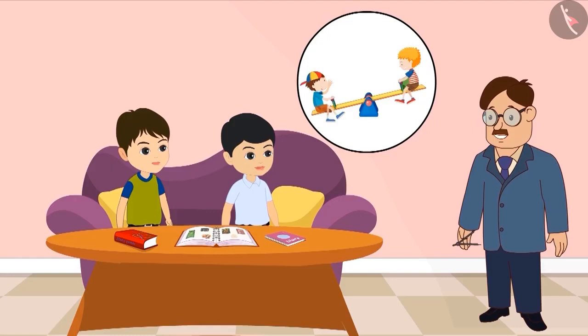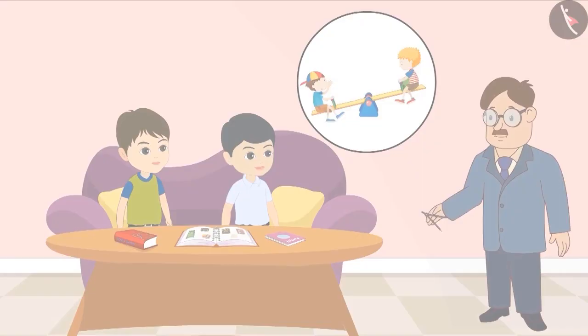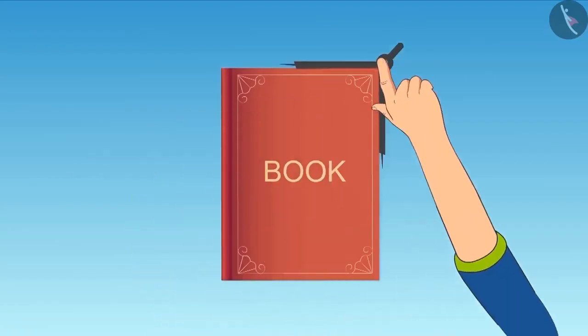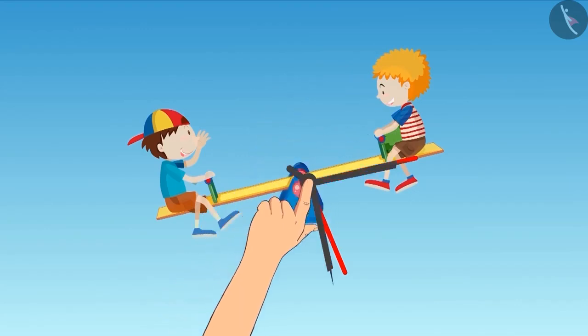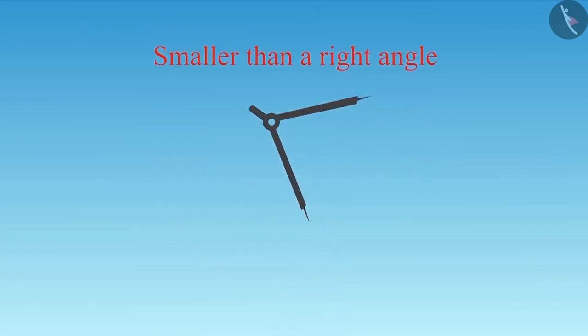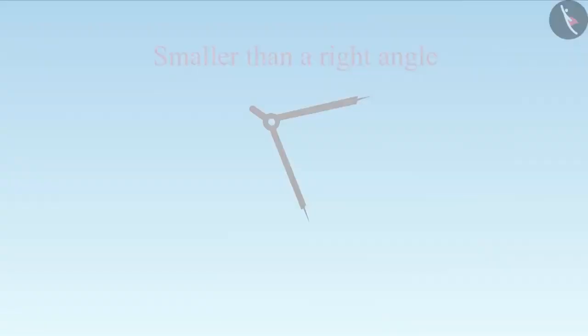To identify the angle in this picture, we will place the divider this way. See, the divider was as open as the measurement of the right angle before. Then to measure this angle, we had to slightly reduce the distance between the two sides of the divider. This means that this angle is smaller than a right angle.